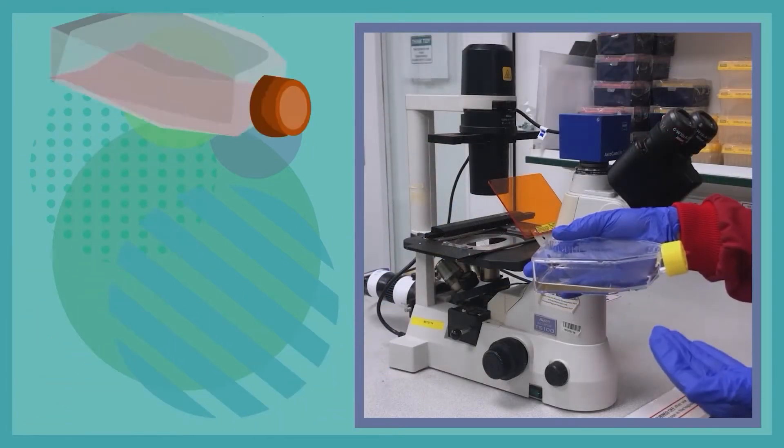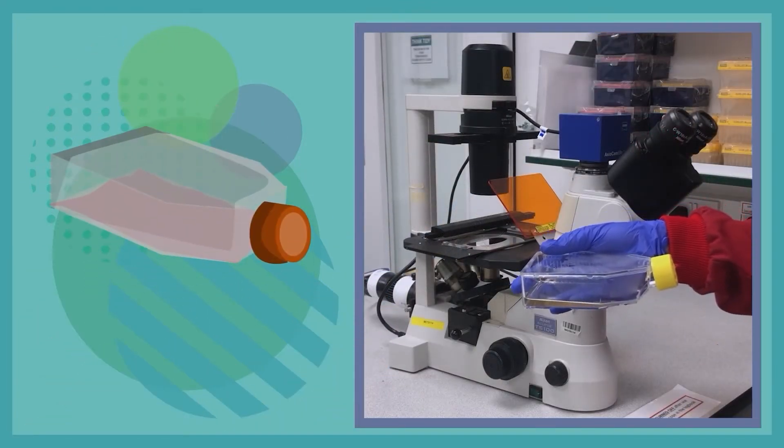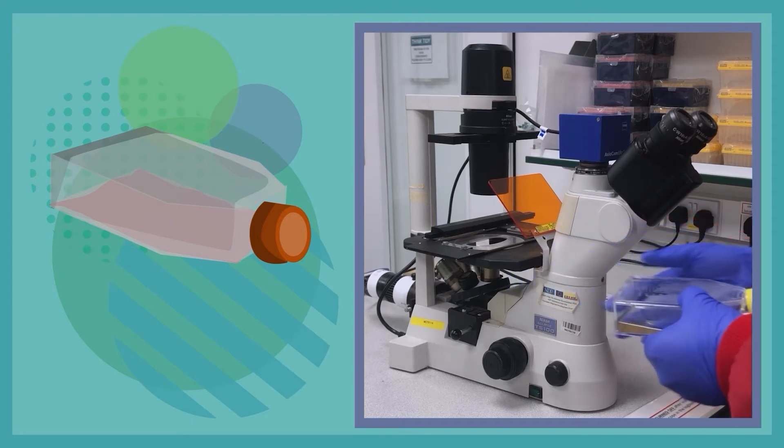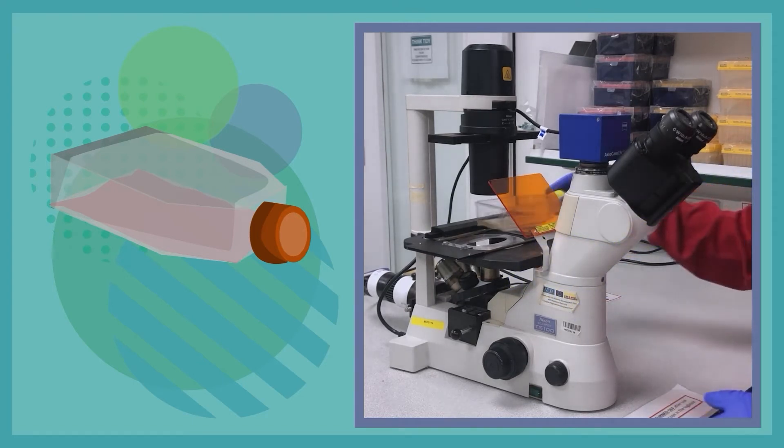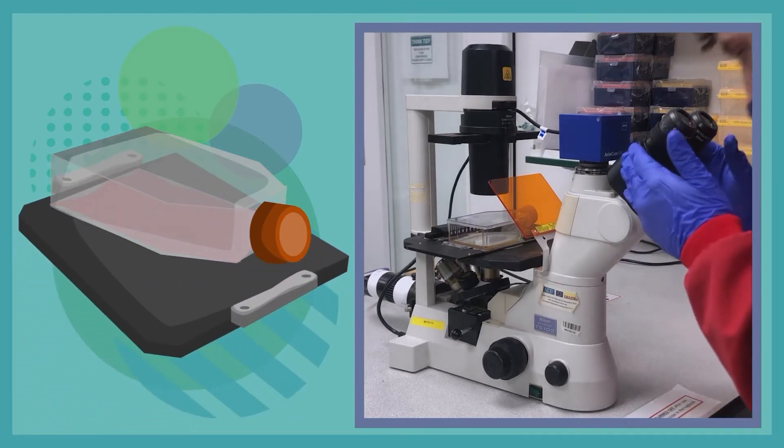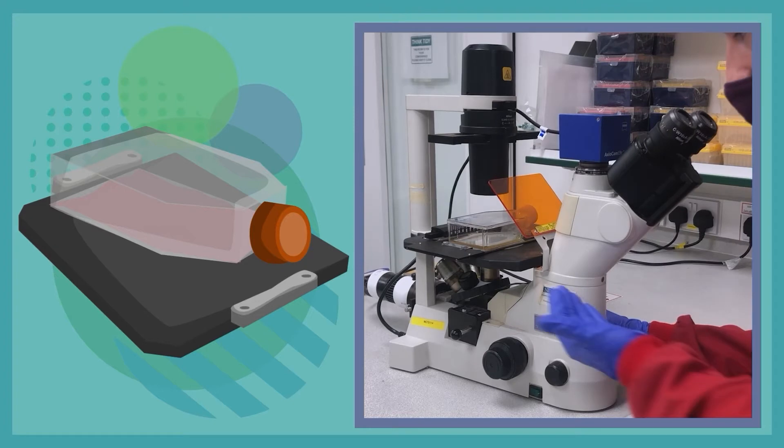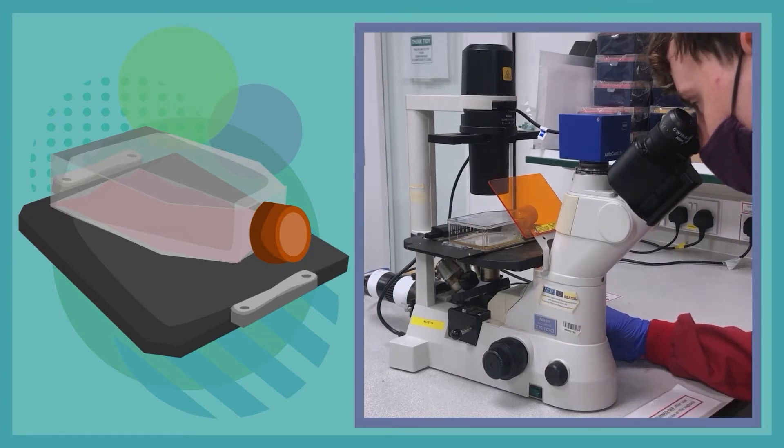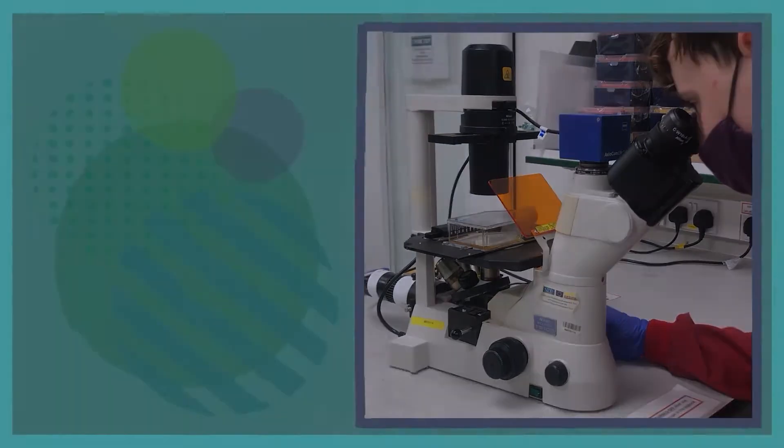Here we have a flask of central nervous system support cells known as astrocytes. To mount onto the microscope, you gently place the flask on the stage between the clips. You can then look down the eyepieces to see your sample, bringing them into focus before bringing them up on your computer screen.